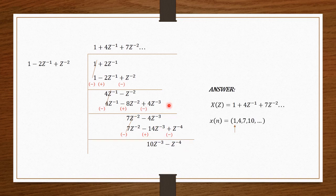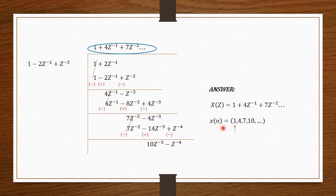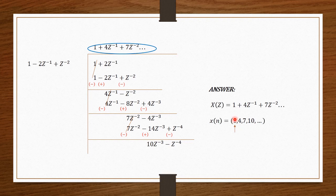So our answer is X of Z equal to 1 plus 4Z inverse plus 7Z power minus 2 plus 10Z power minus 3, and so on. From this we write the inverse Z transform as X of N with coefficients 1, 4, 7, 10, and so on. Since the powers of Z are negative, we get only positive values of N: at N equals 0 the value is 1, N equals 1 is 4, N equals 2 is 7, N equals 3 is 10, and so on.